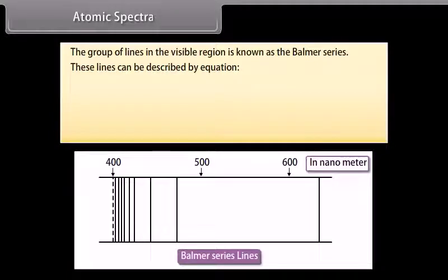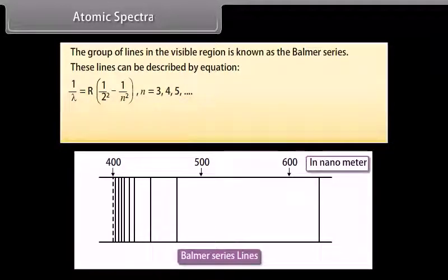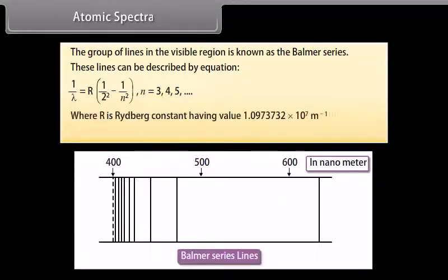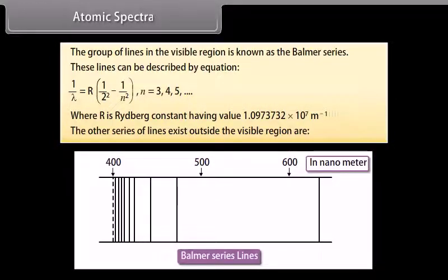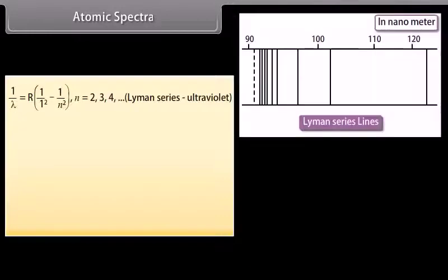The Balmer series lines can be described by: 1/λ = R(1/2² − 1/n²), where n may be 3, 4, 5 and so on, and R is the Rydberg constant with value 1.0973732 × 10⁷ per meter. The Lyman series, which lies outside the visible region, is given by: 1/λ = R(1/1² − 1/n²), where n may be 2, 3, 4, 5 and so on.